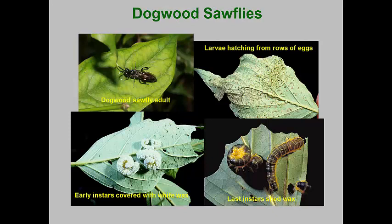A frequent defoliator of green twig, red twig, and gray dogwoods are sawflies. There are two species and both have the same habits. The adults emerge in late spring and insert rows of eggs in the fully expanded leaves. Upon hatching, the larvae first skeletonize leaves gregariously, but soon they separate and begin to feed on individual leaves. The larvae hide during the day coiled up on leaf undersurfaces and are covered with a white waxy coating.